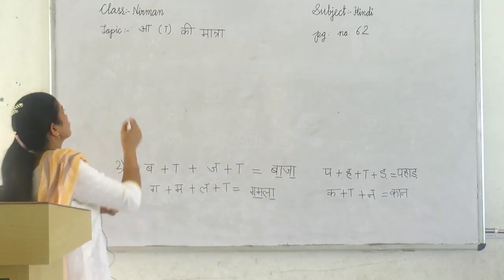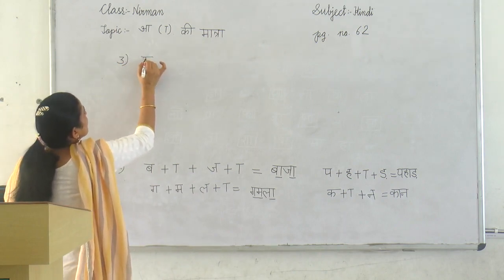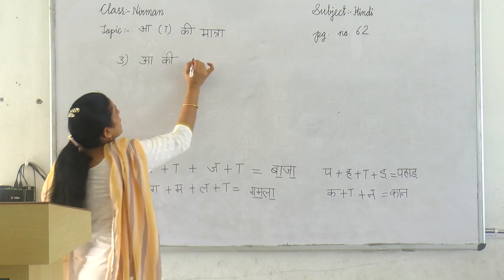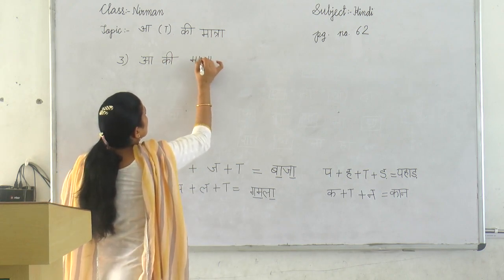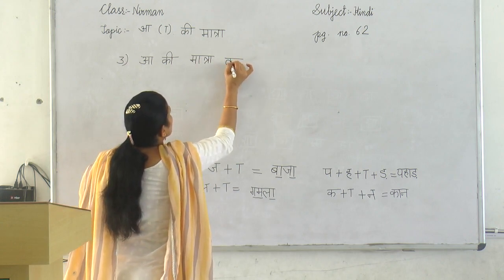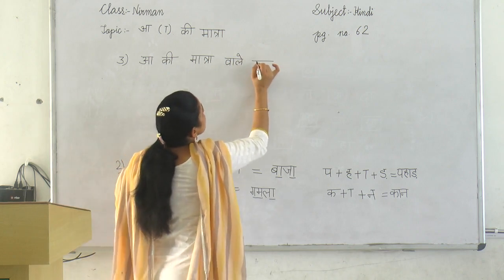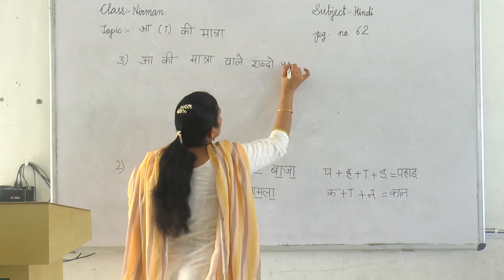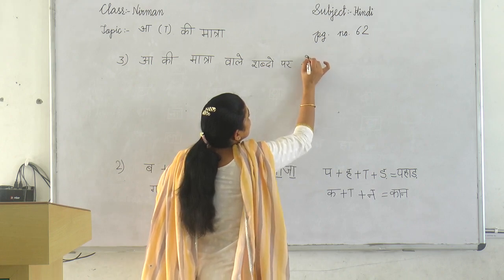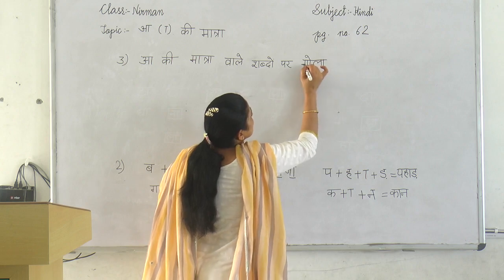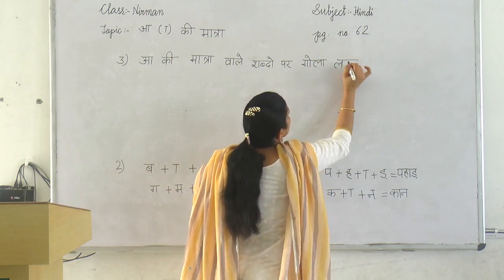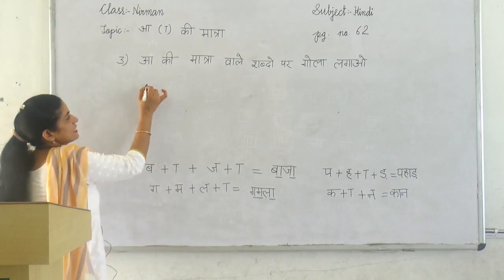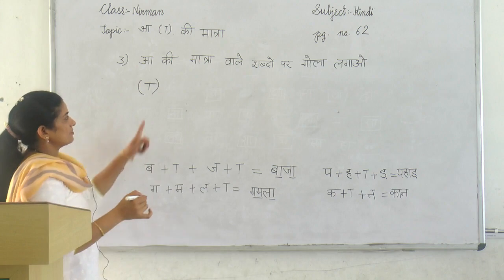Now third question on this page is: A ki matra wale shabdo par gol lagao. A ki matra wale shabdo par gol — gol means circle. Gol lagao. So there are some words and A ki matra is a standing line. So in the word which has a standing line, you have to circle that word.